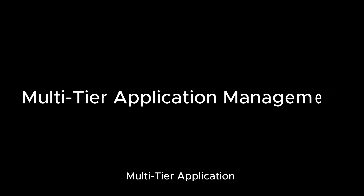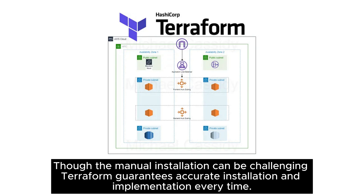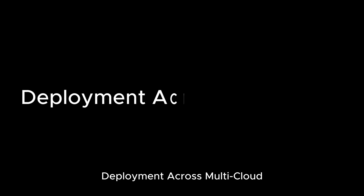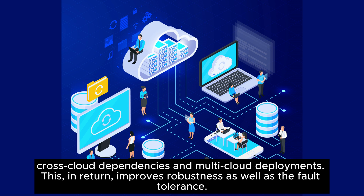Multi-tier Application Management: Terraform handles the interdependencies of each tier by grouping them. Plugins and dependencies play a crucial role in maintaining uniformity across the tiers. Though manual installation can be challenging, Terraform guarantees accurate installation and implementation every time. Deployment Across Multicloud: Terraform is popular for its usage across any cloud. The HCL configuration file assists in managing cross-cloud dependencies and multi-cloud deployments, improving robustness as well as fault tolerance.